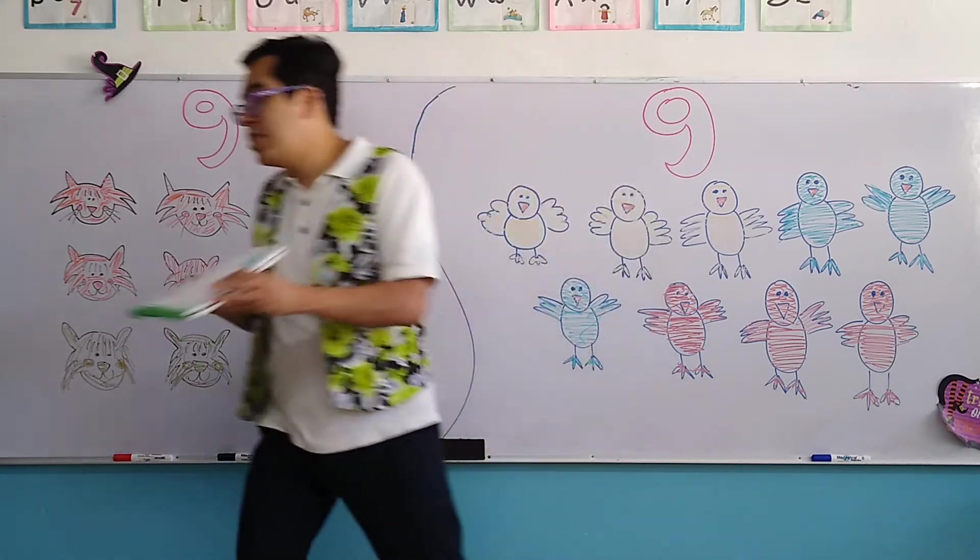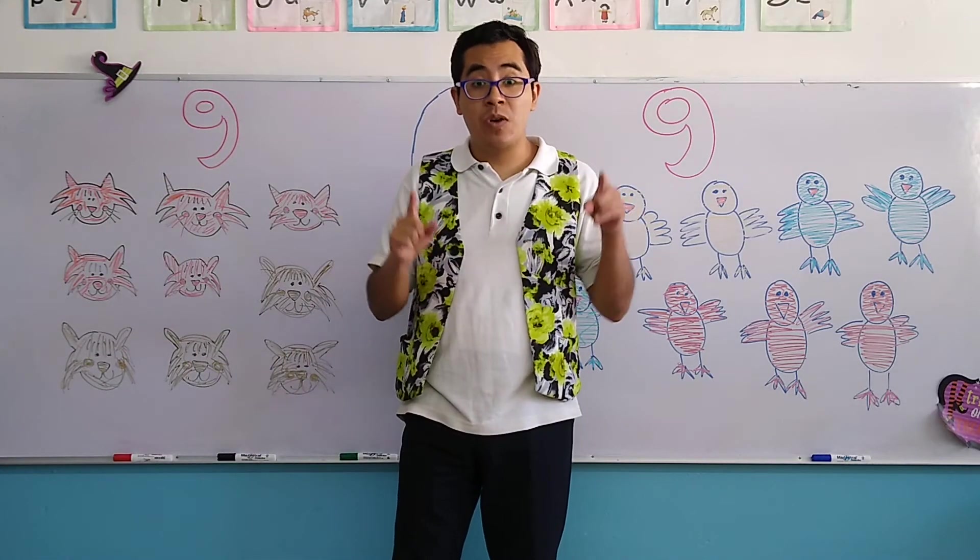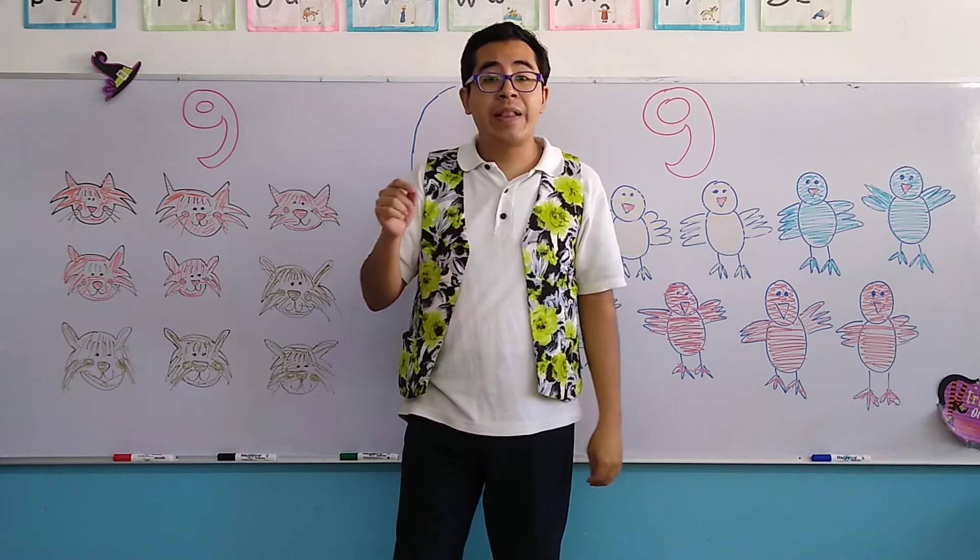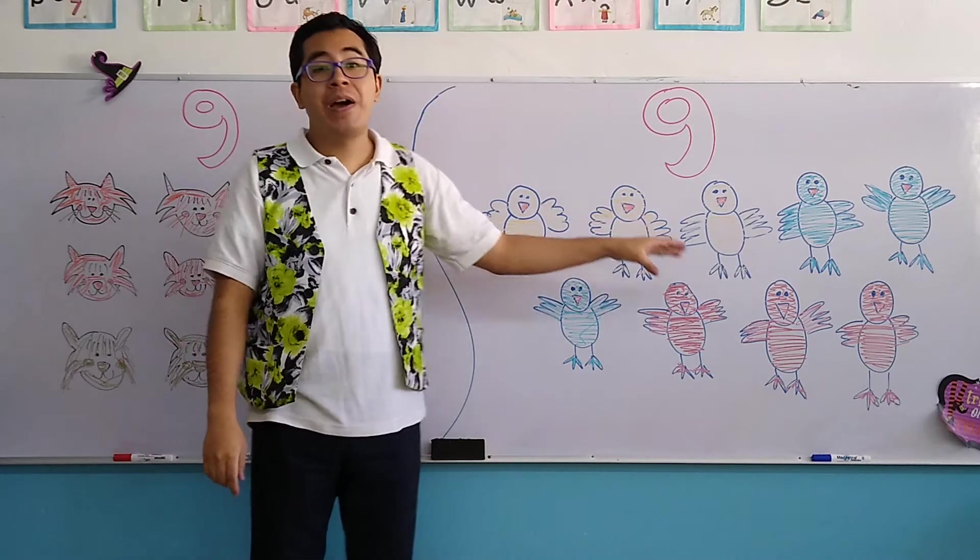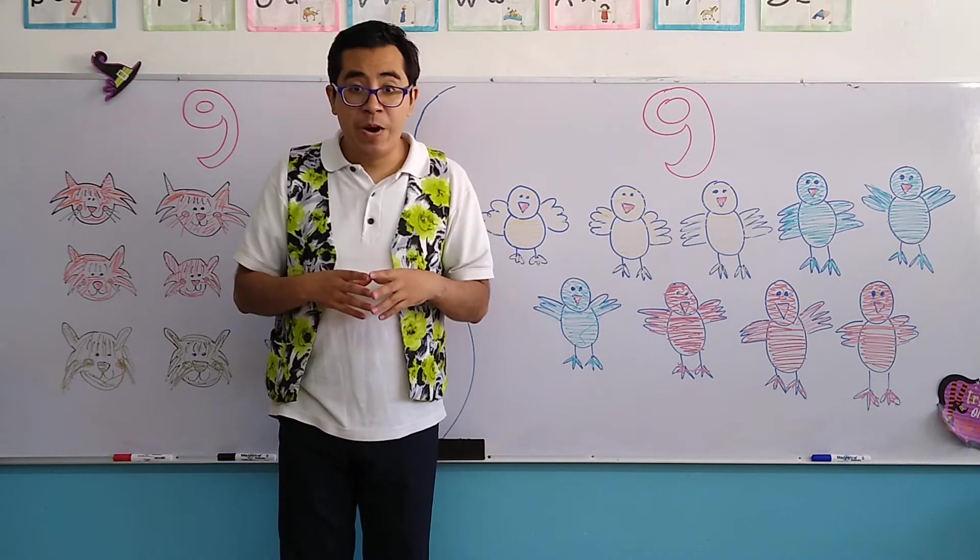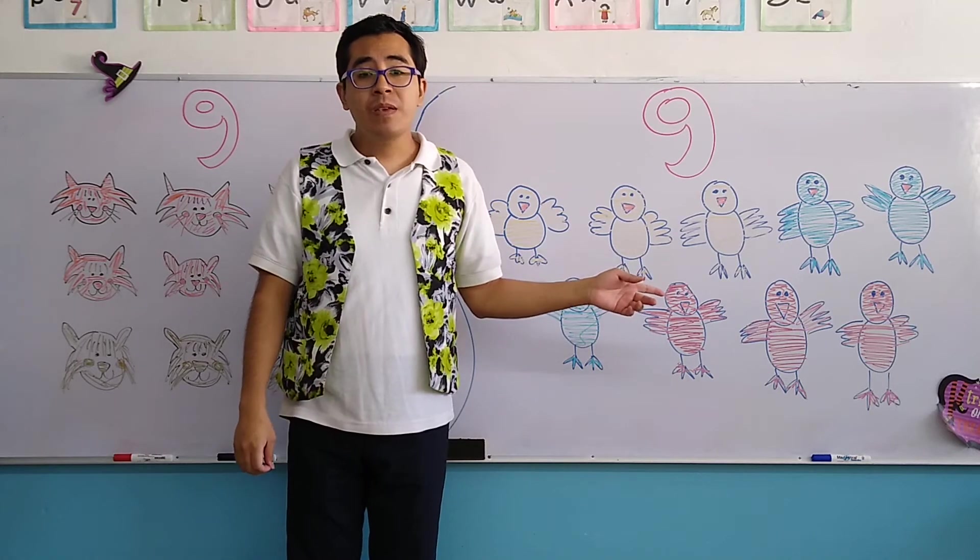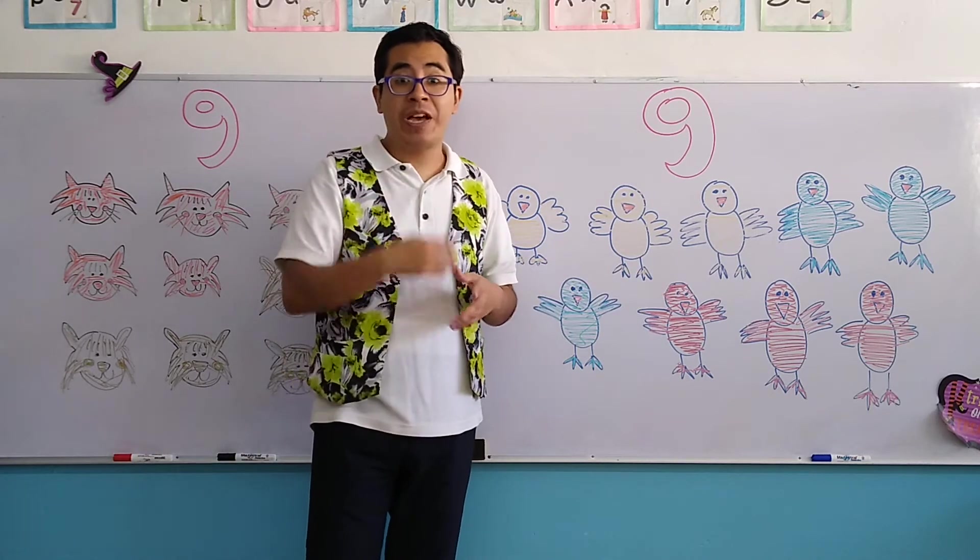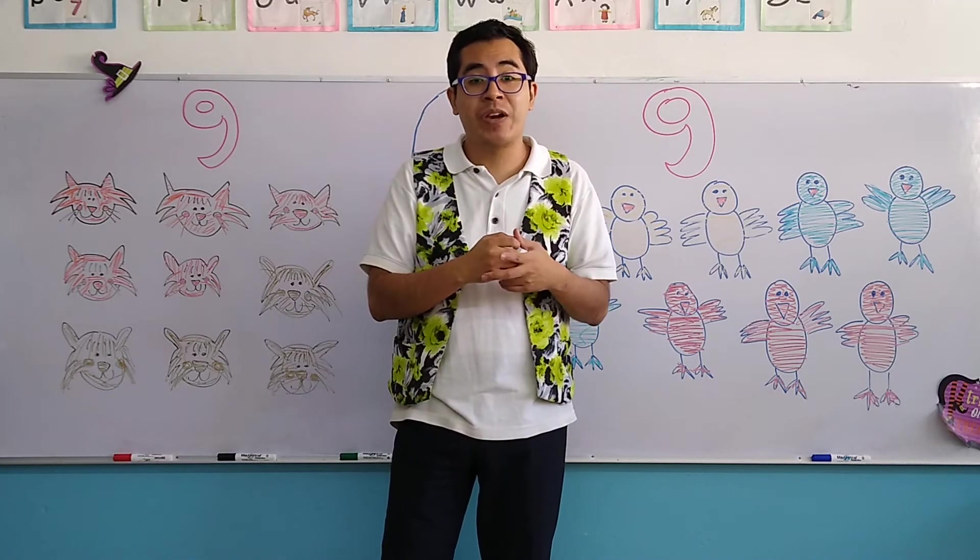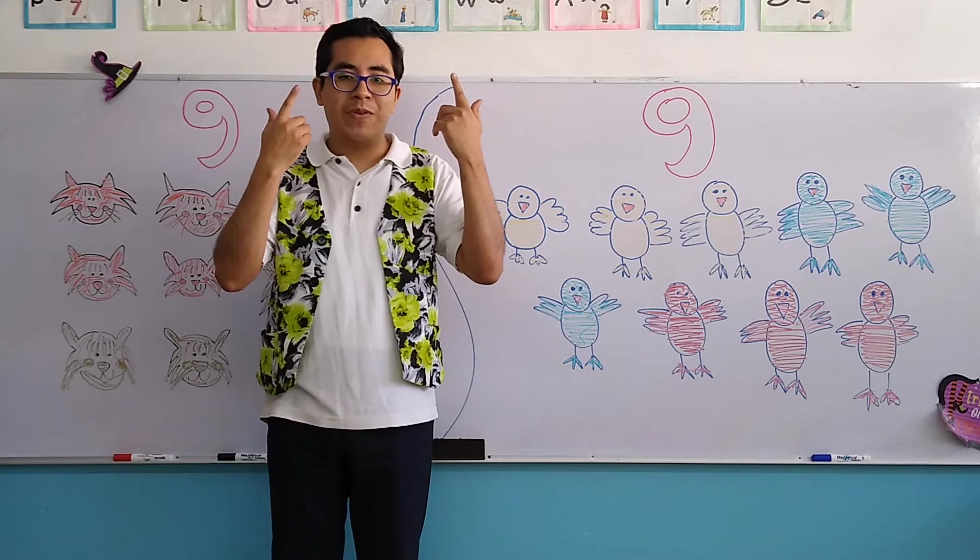Now let's continue with the second activity. For the second activity, we have the number 9. Don't forget that the number 9 looks like a balloon. And under the number 9 we have another type of animals. These animals are called birds. Please repeat after me: birds. Like the angry birds. Do you know that video game? But these birds are not angry, these are happy birds.